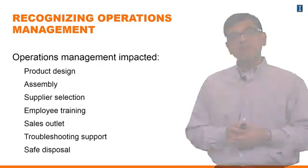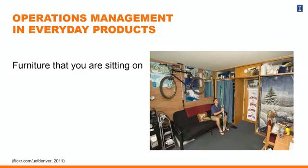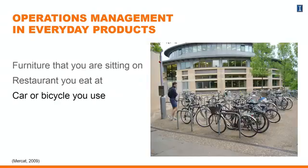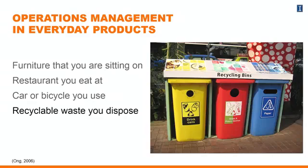Taking this a little bit further, you can think about operations management in a similar way for everyday products around you. Take the furniture you're sitting on — it had to go through product development all the way to being delivered to your place, and through how you're going to dispose of it. Take the restaurant you eat at — it has to come up with a concept, whether fast food or sit-in, and deliver that through people and managing their inventory of supplies. You could talk about the car or bicycle you use, assembled from different parts, designed according to users, and delivered to the sales store.